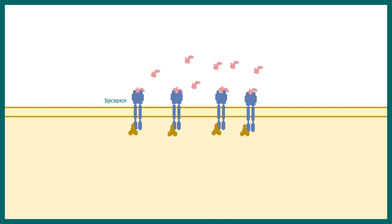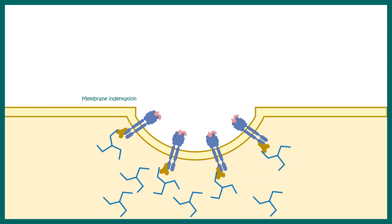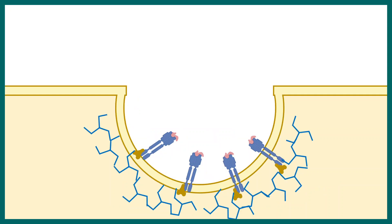There are additional proteins known as BAR family proteins which lead to membrane curvature — not shown in this animation — but the membrane would curve and invaginate towards the cytoplasmic side. There would be recruitment of molecules known as clathrin. Clathrin organizes itself with the help of these adapter proteins and forms a clathrin coat, resulting in what is known as a clathrin-coated vesicle.